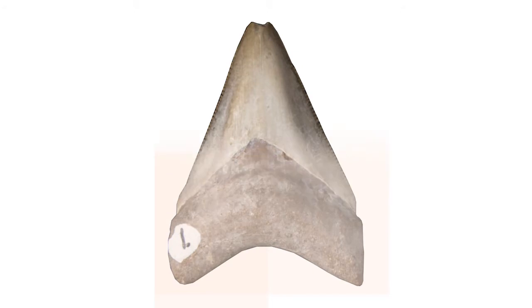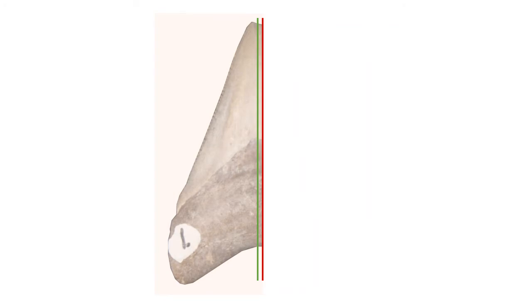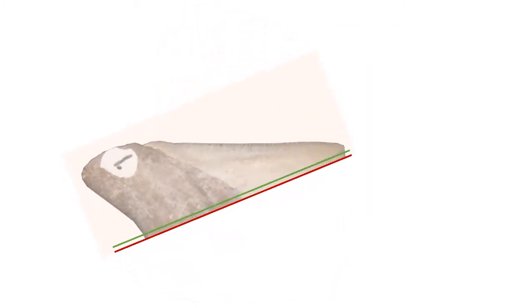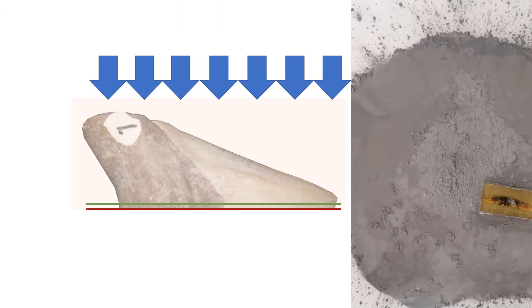This is a shark tooth and this is the shark tooth embedded in resin. The green line represents the plane of observation and the red line is going to represent our initial cut. Once the specimen is cut, we move on to the silica carbide grinding process and if we apply equal pressure across the entire specimen, this is going to help us reach the plane of observation.